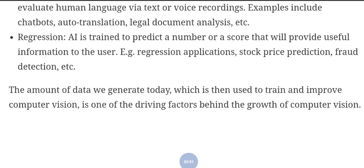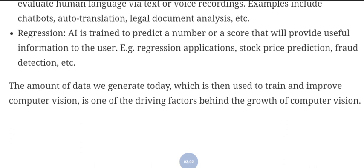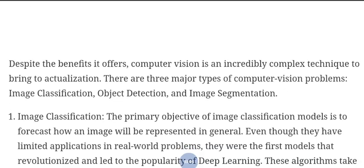The large amount of data generated today, which is used to train and improve models, is one of the driving factors behind the growth of computer vision. Computer vision is an incredibly complex technique to bring to actualization. There are three major types of computer vision problems: image classification, object detection, and image segmentation.